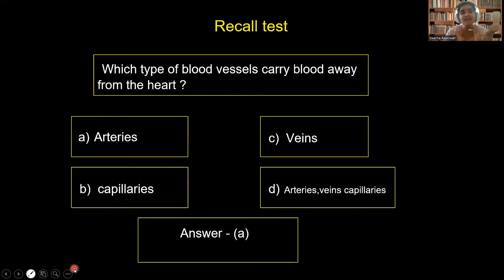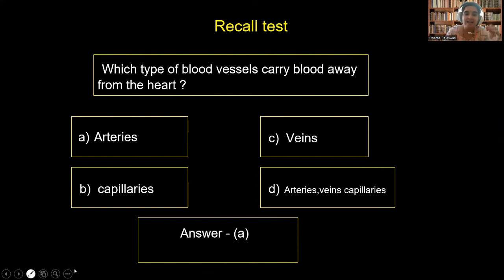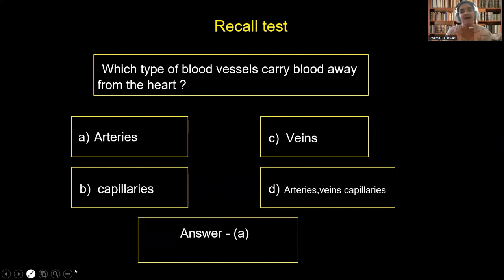Let us take a small test. Which type of blood vessels carry blood away from the heart — carrying blood from the heart to different parts? We are familiar now — they are arteries. Arteries carry blood from the heart to different parts, whereas veins carry blood from different parts to the heart. So the correct answer is arteries.